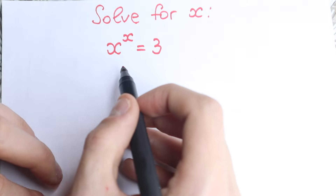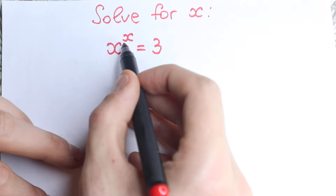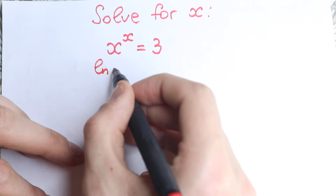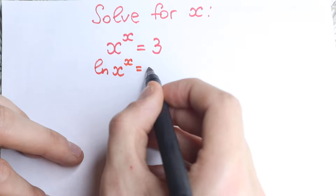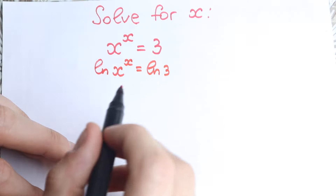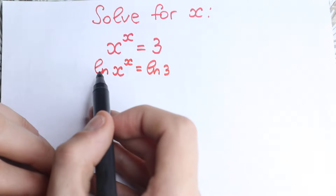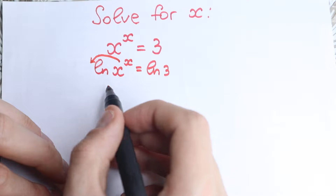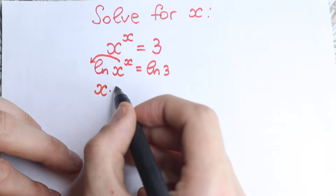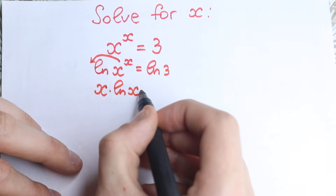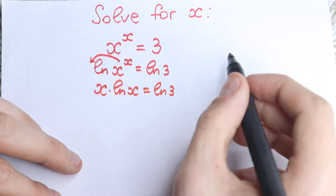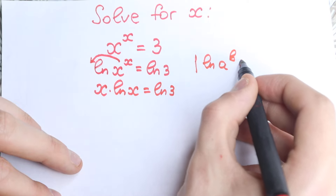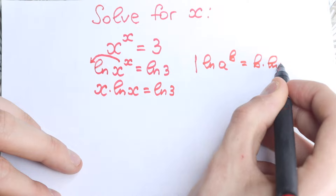Let's try to solve it: x to the power x equals 3. First, since we have x in our exponent, it's really useful to apply the natural log on both sides: ln(x^x) = ln(3). Using the log power rule, the exponent x comes down, giving us x times ln(x) = ln(3). The rule is: ln(a^b) = b times ln(a).